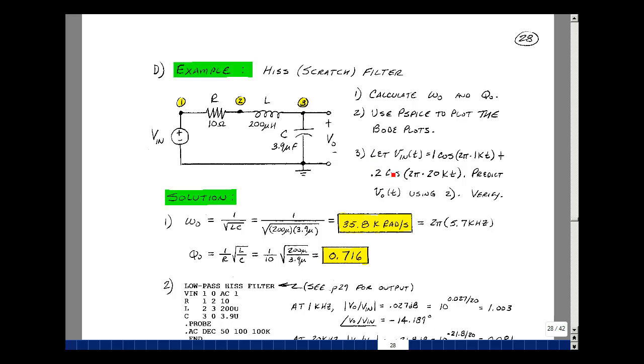Let's first calculate the value of omega naught and q naught. And let's use PSPICE to plot our Bode plots of magnitude and angle. And lastly, let's let our input be a 1 volt cosine wave at 1 kilohertz, and a 200 millivolt cosine at 20 kilohertz. This can represent our audio signal and actually our noise.